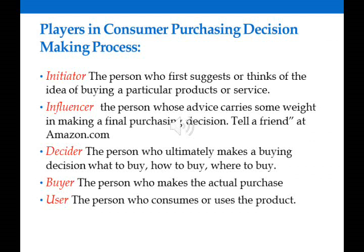The second category is the influencer — the person whose advice carries weight in making a final purchasing decision. Ask yourself: whose opinion am I going to take? That is the one influencing your decision. Maybe it's your best friend, a family member, or a blogger. That's why we call them influencers — because they affect our decisions. We also have influencers from our online network, people we may not know in reality but interact with online.